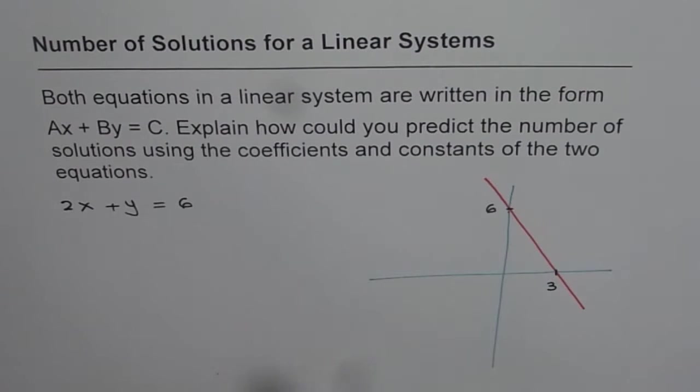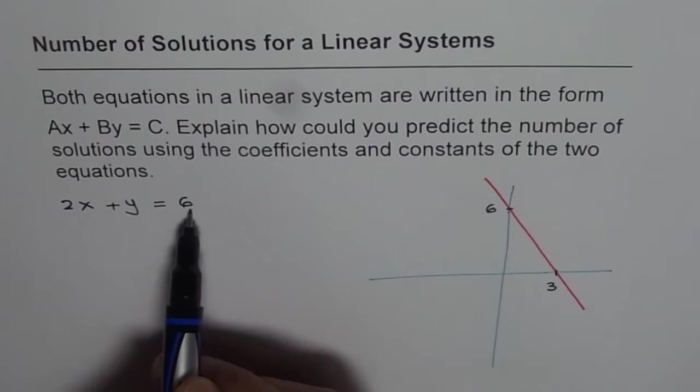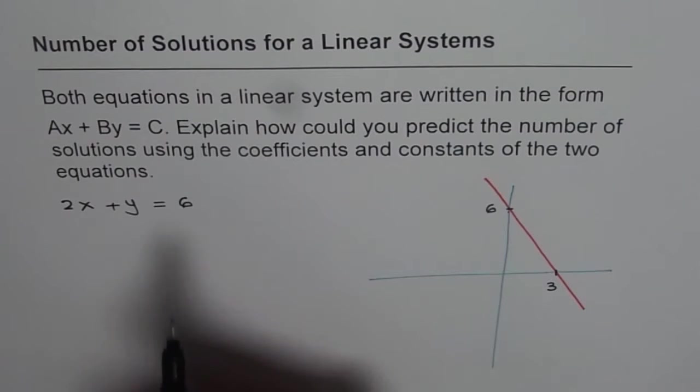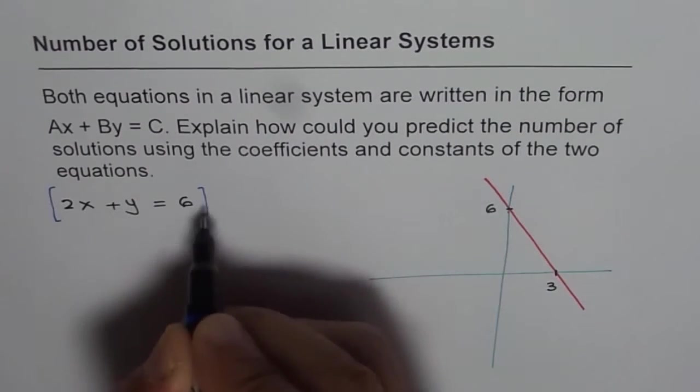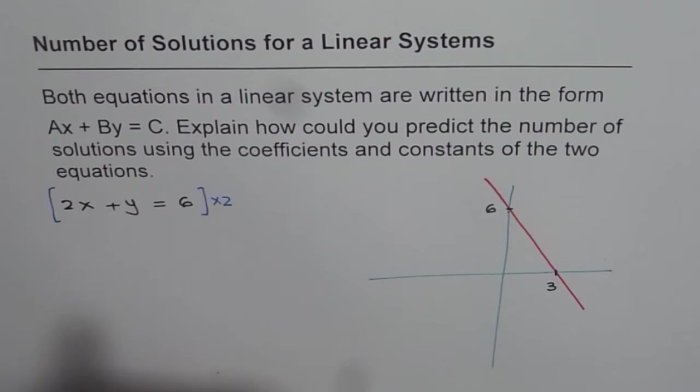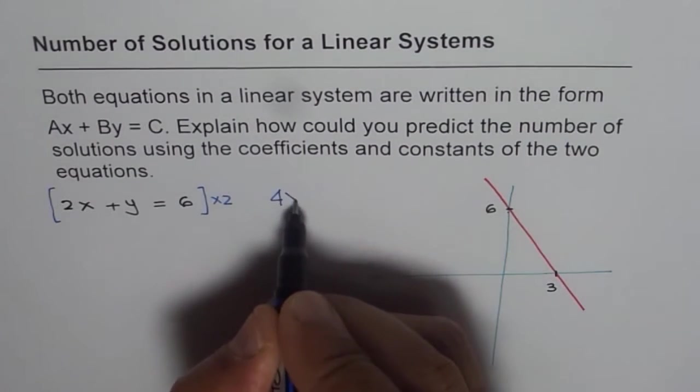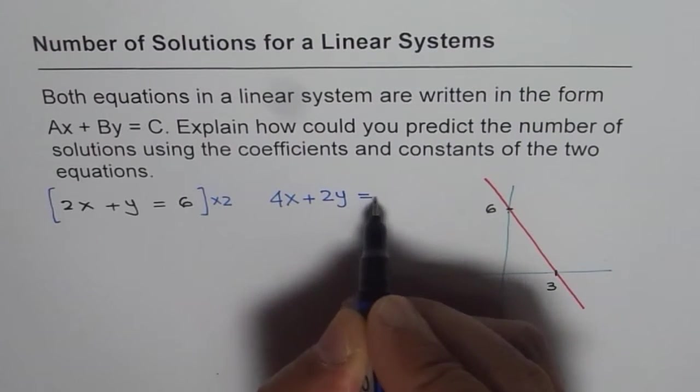Let's say one of the equations is like this. And now, let us have another equation in which we will multiply each number, coefficients and the constant by the same thing. Let us say we times the whole equation by 2. So if we times the whole equation by 2, what do I get? I get 4X plus 2Y equals to 12.